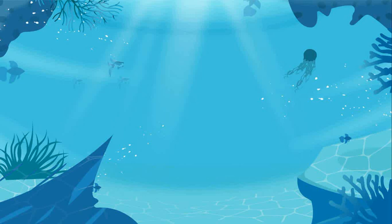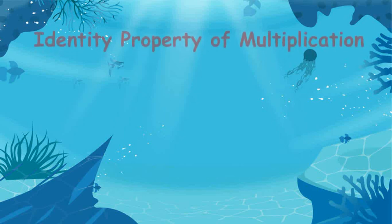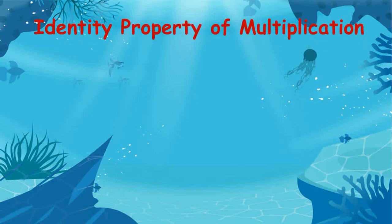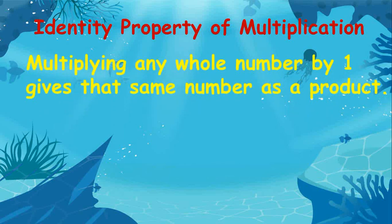The identity property of multiplication states that multiplying any whole number by 1 gives that same number as a product. For example, 32 times 1 is equal to 32.